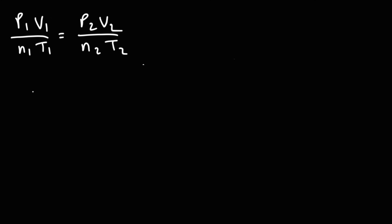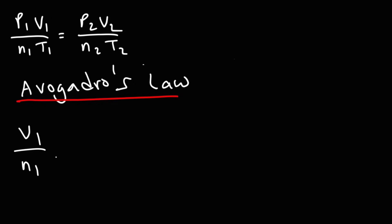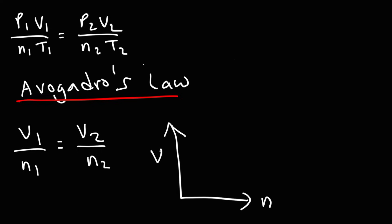Avogadro's law holds pressure and temperature constant, giving a relationship between volume and moles: V1 over N1 equals V2 over N2. As we increase the moles, the volume increases. The more moles of gas you have, the greater the volume that gas will occupy — like blowing more air into a balloon, it expands.